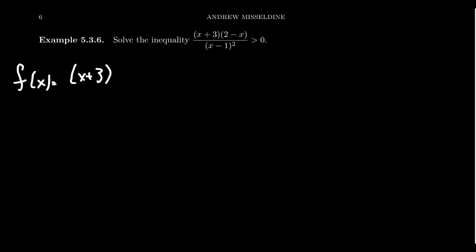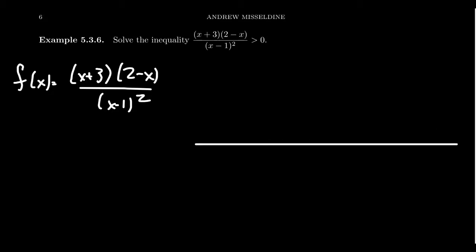So we have f(x) = (x+3)(2−x)/(x−1)². We want to graph this function. Looking at the numerator, it's a rational function and the numerator gives us x-intercepts. We have an x-intercept at negative 3 and an x-intercept at positive 2. Notice that both of these factors have odd powers, so we're going to cross the x-axis at negative 3 and positive 2.